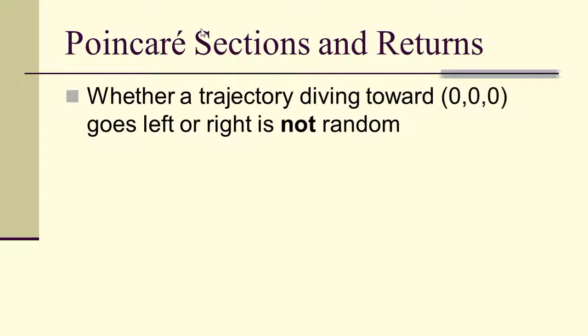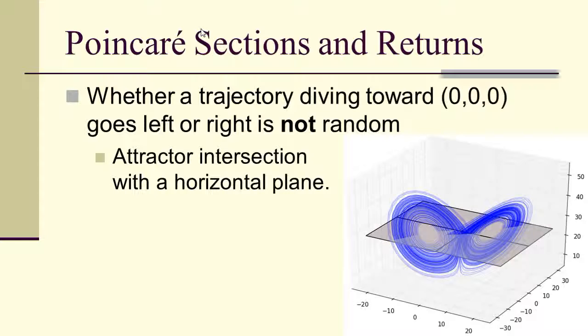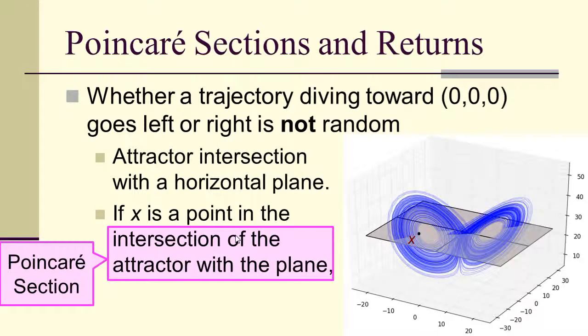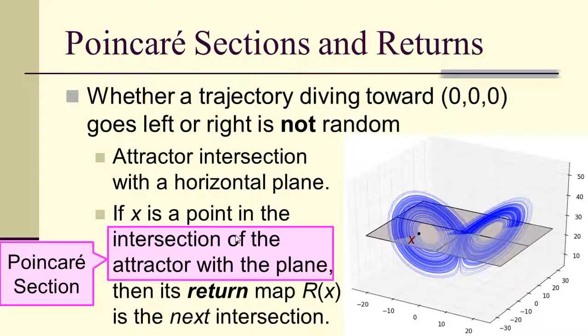Now, whether a trajectory dives toward (0,0,0) and goes either right or left, that's not random. That's completely determined by the system of three differential equations. So if we were to take a plane, a horizontal plane, and intersect it with the Lorenz attractor, then what we should see is capture a picture of diving down toward the (0,0,0) and the Lorenz attractor. If x is a point in the intersection of the attractor with the plane, then the intersection of the attractor with the plane is what's known as the Poincaré section, then its return map is the next intersection. So if x is there, r of x is the next time it comes back down into this intersection.